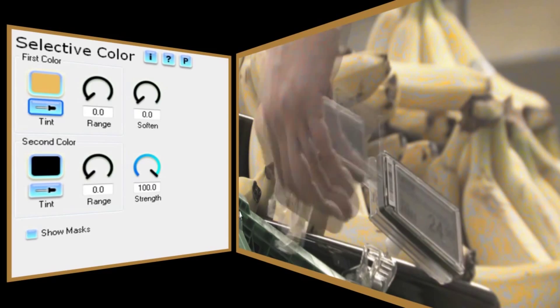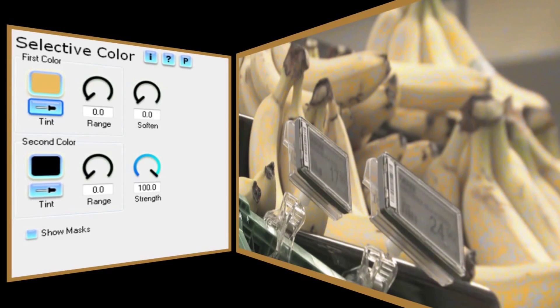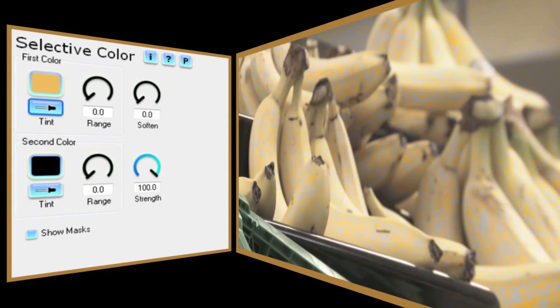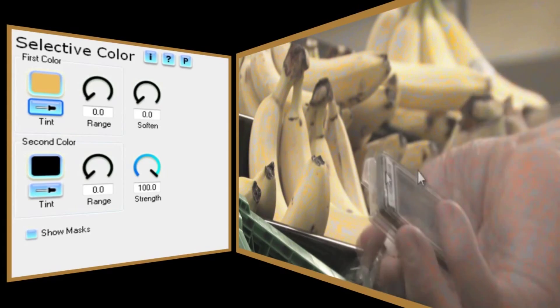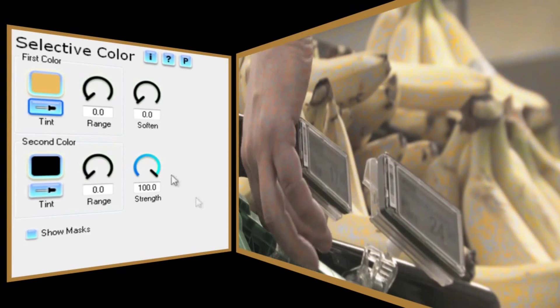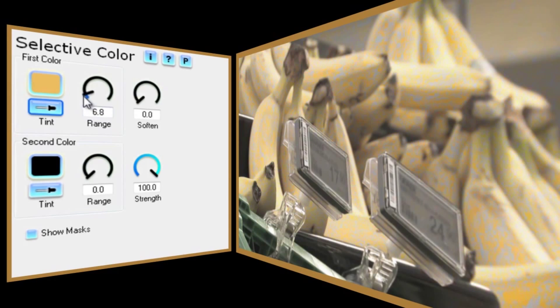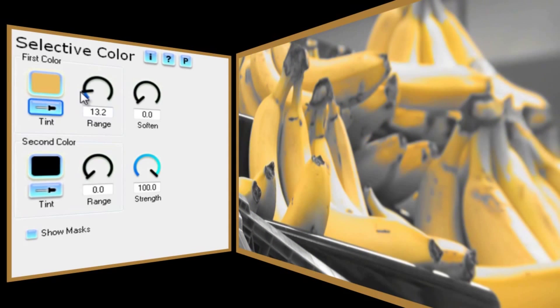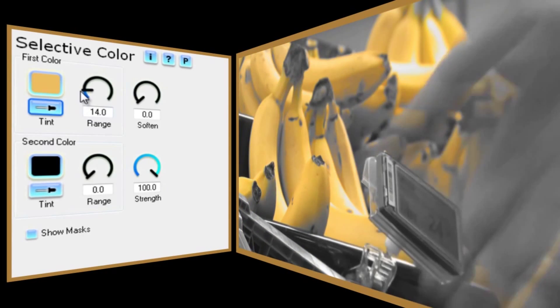But this isn't exactly the result I'm looking for. It's still showing the green of the crates and the pink of the skin and overall it's looking a bit washed out. But if I increase the range ever so slightly, the rich yellow of the bananas starts to come through, while everything else stays grey.